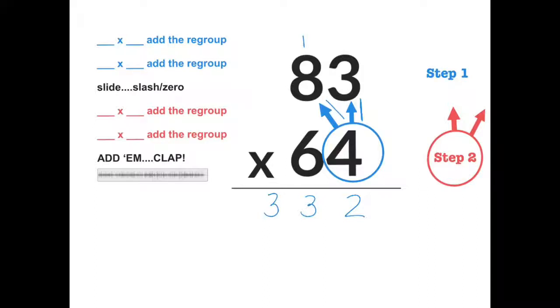Now I'm moving on to step two. So I finished my first row, now I have to move on to my second row. So I need to slash out my regroup so I don't get confused, and bring over my step two here. So now I'm looking at six times three, but I know this six isn't really a six. It's in the tens place, so it's worth sixty.